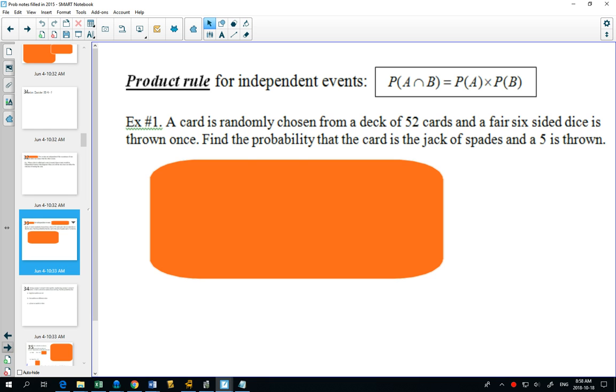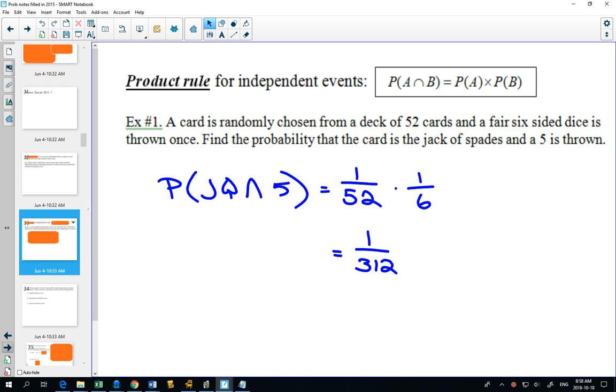So here's our first example. A card is randomly chosen, and a dice is thrown once. Find the probability that it's the jack of spades, and a five is thrown. Well, those don't affect each other, so your chances of getting the jack are 1 out of 52. The chances of getting your five are 1 out of 6. So the chances of both of those things happening are 1 out of 312. And you can just multiply the probabilities together.